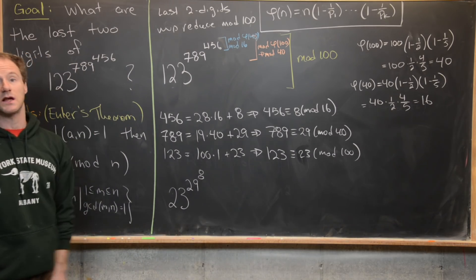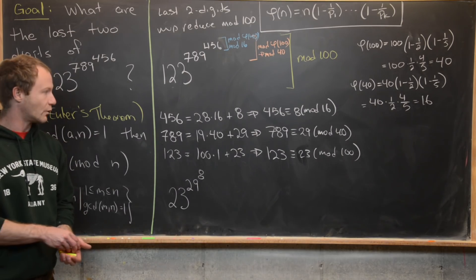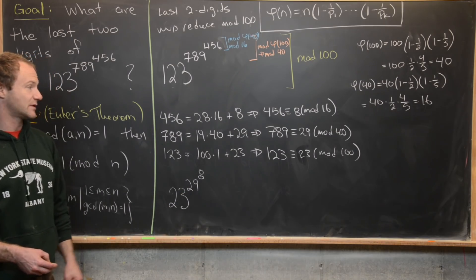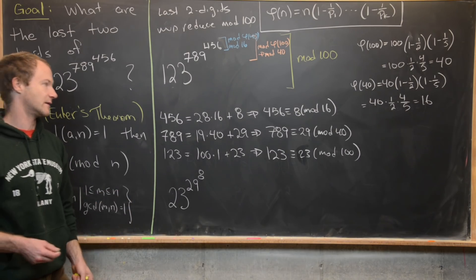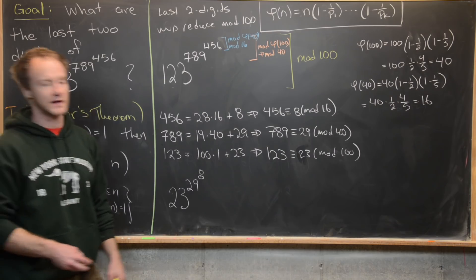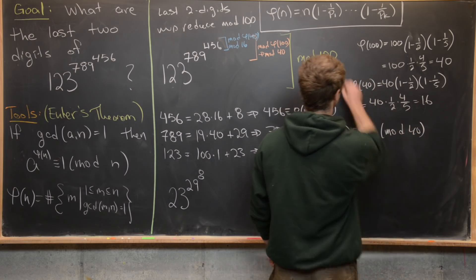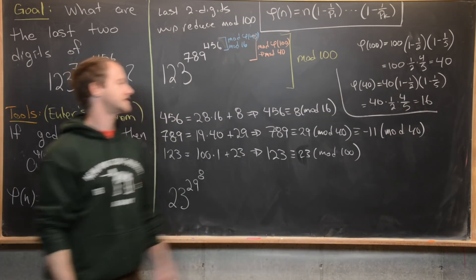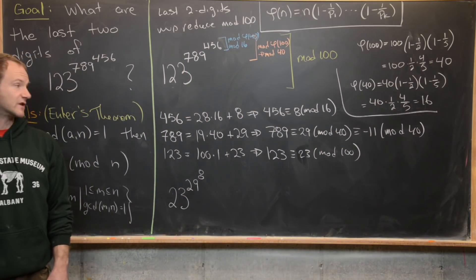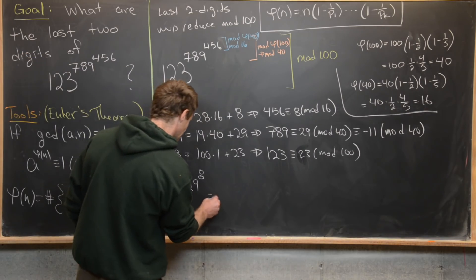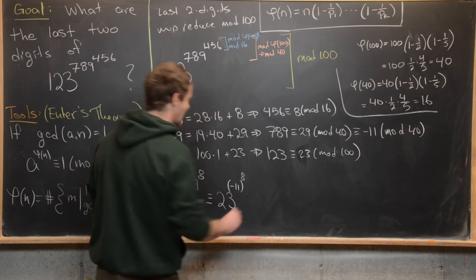But that might seem still a little bit tricky. Maybe this is too much calculation more than we want to do. But we can use a simplification rule here. And that is working with negative numbers instead of working with positive numbers. So notice if we have 29 mod 40, that's going to be congruent to minus 11 mod 40. And how do we see that so quickly? Well, notice if we do 29 minus 40, we're going to get minus 11. So that means we can rewrite this as 23 to the minus 11 to the eighth power.